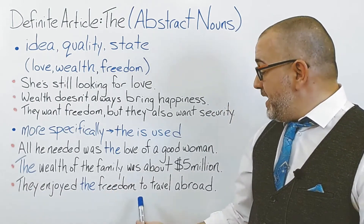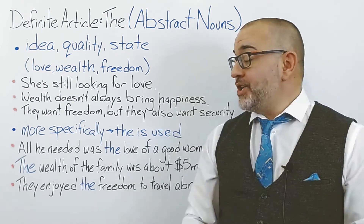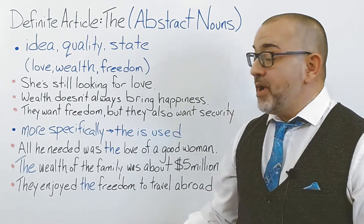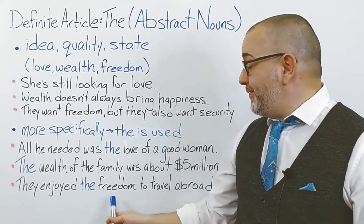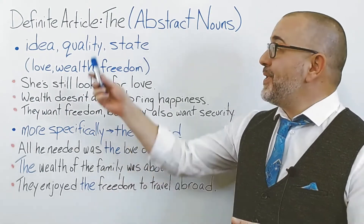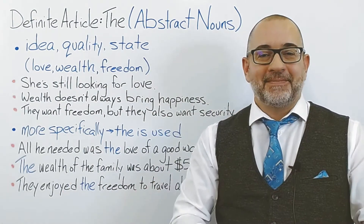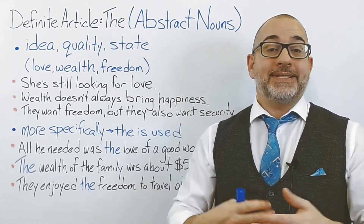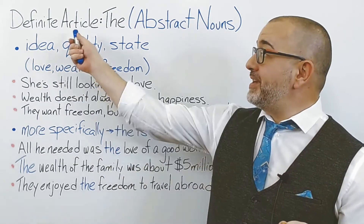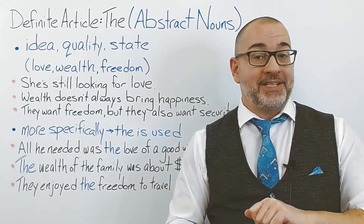They enjoyed the freedom to travel abroad. Again, using this same abstract noun freedom, but we now know it's freedom to travel abroad. Hence, we are going to use the definite article, 'the.' I hope this helps you understand when and when not to use the definite article, 'the,' when it comes to abstract nouns.